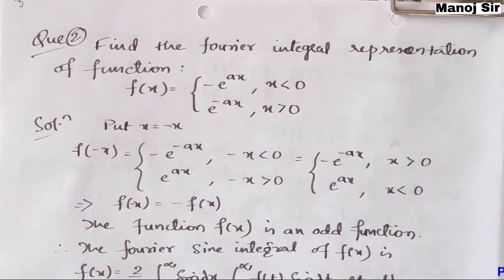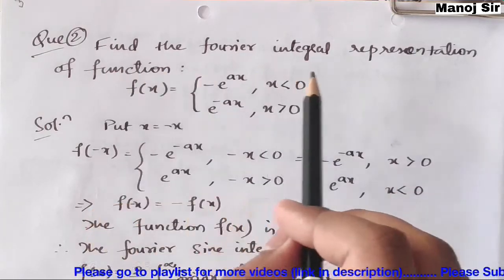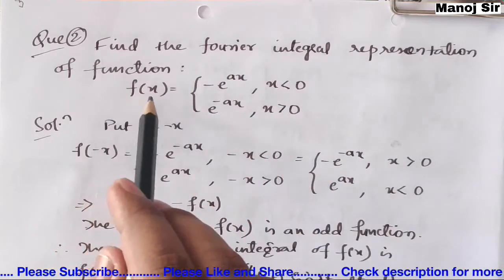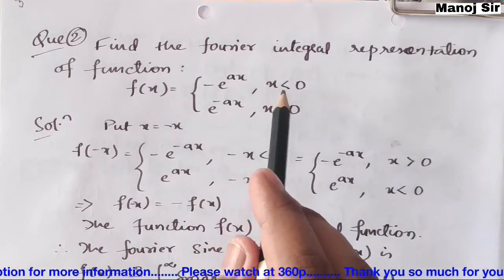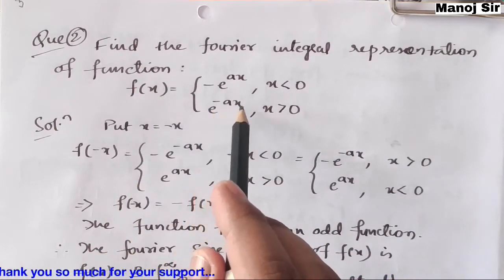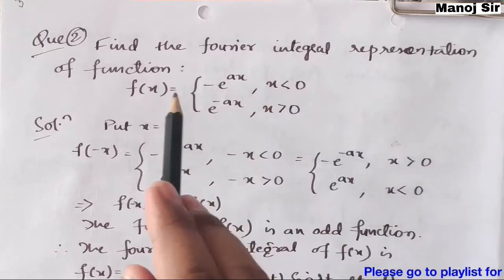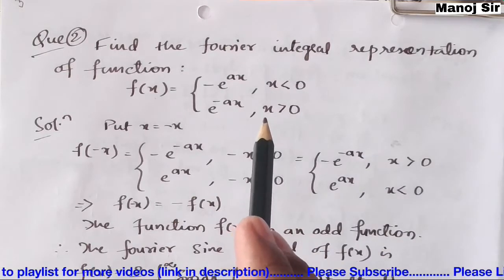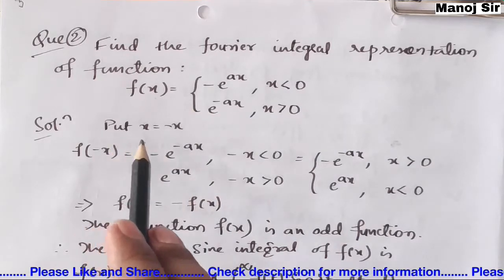Let us start with question 2 on the topic of Fourier integral — a very important problem. The question says: find the Fourier integral representation of the function f(x), where f(x) = -e^(ax) when x < 0, and f(x) = e^(-ax) when x > 0.